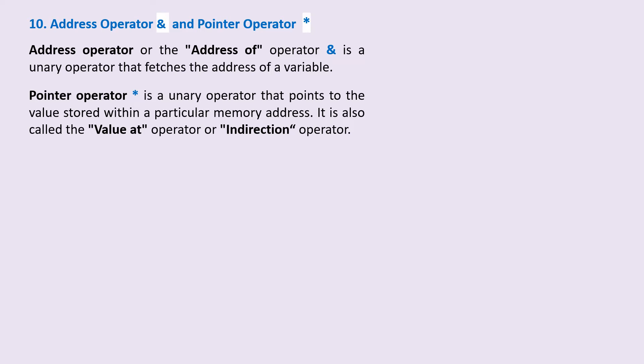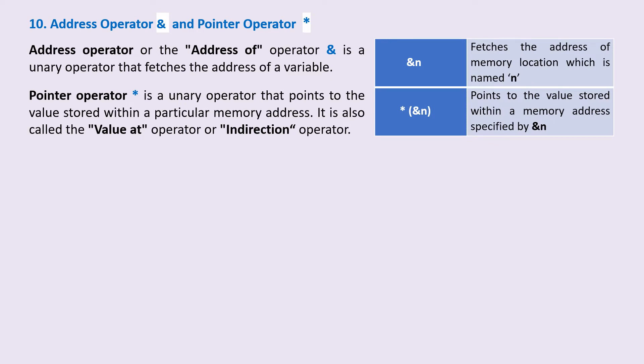Ampersand n is an example of the address operator which fetches the address of memory location named n. The asterisk ampersand n points to the value stored within a memory address specified by ampersand n or address of n.